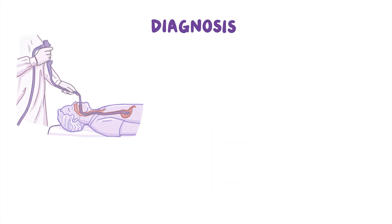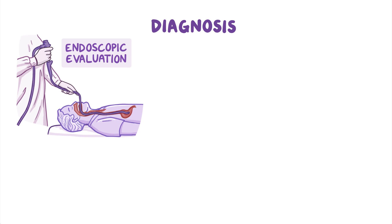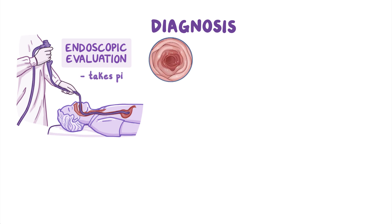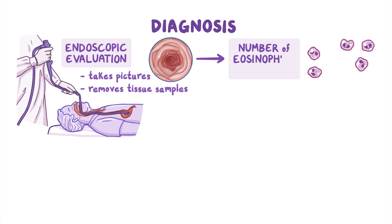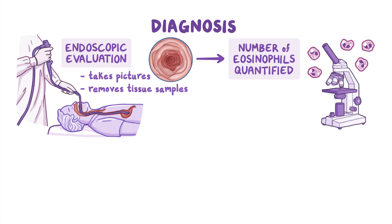Eosinophilic esophagitis is diagnosed based upon endoscopic evaluation in a patient with clinical symptoms. During the upper endoscopy, a procedure in which a small, flexible tube with a camera is placed down a person's throat to take pictures and remove tissue samples of the upper gastrointestinal tract and esophagus,